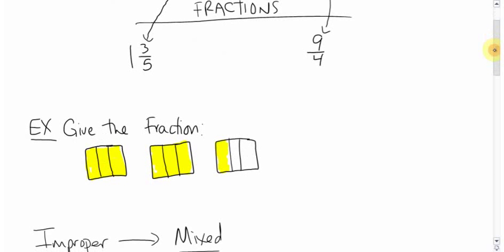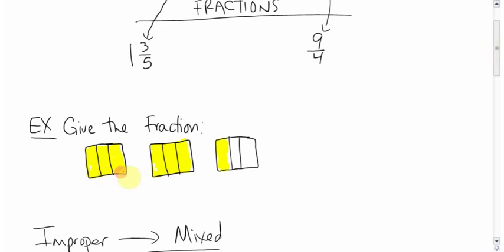So let's take a look at a question like this before we get to how to switch back and forth. What would the fraction be for this little diagram here? Well you have these three boxes, each is cut into three sections, or thirds.